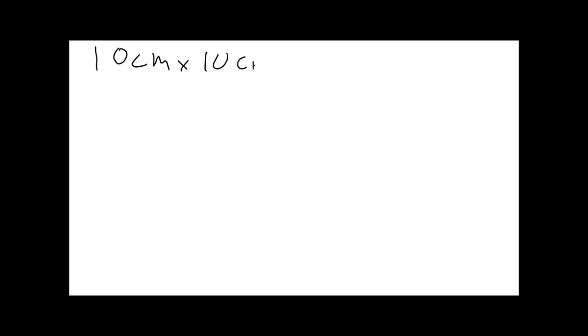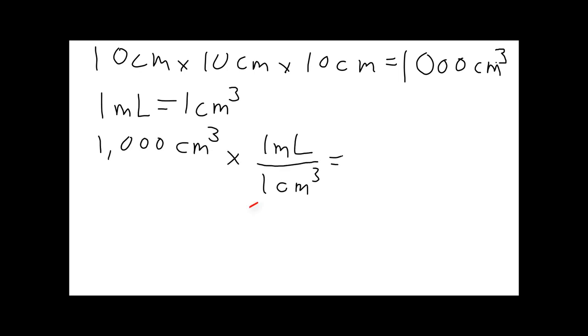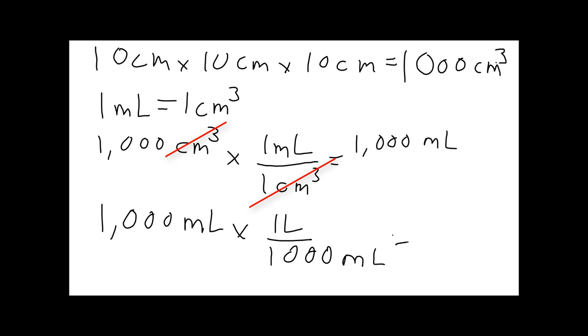If we take that math and write it out: starting with the bigger cube, ten centimeters times ten centimeters times ten centimeters gives us one thousand centimeters cubed — remember, we also multiply the units. Then using our conversion factor where one milliliter equals one centimeter cubed, centimeters cubed cancels with centimeters cubed, and we're left with one thousand milliliters. Converting that using one liter on top and a thousand milliliters on bottom, the thousand milliliters cancel, and we're left with one liter.